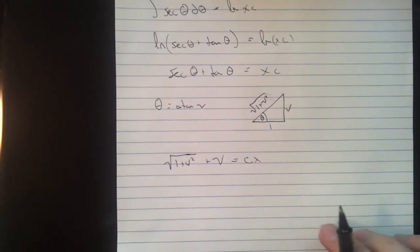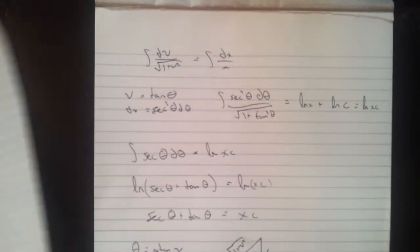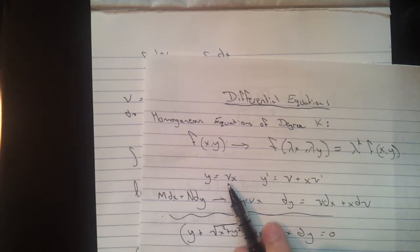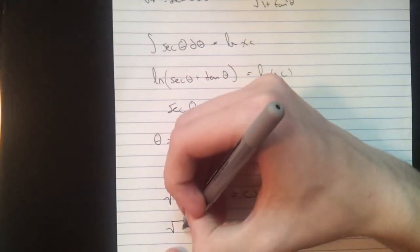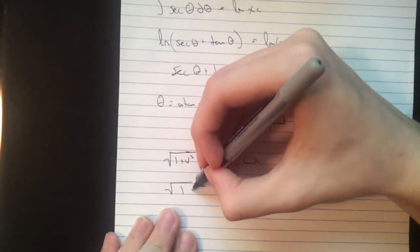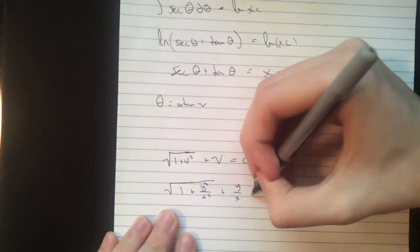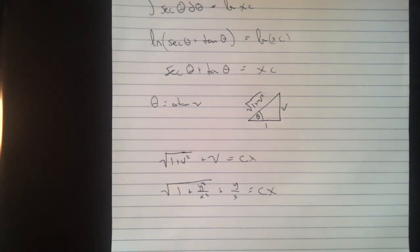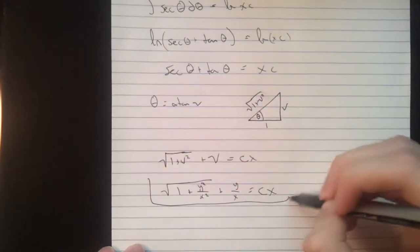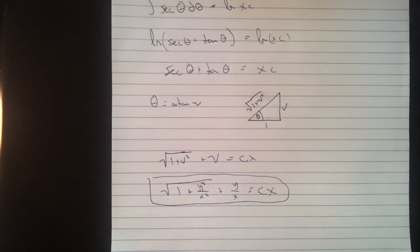And we go back up to the top here. Where did I put that? You go back up to the top over here. We had y equals vx. So v equals y over x. I'm just going to sub that back in. You get the square root of 1 plus y squared over x squared plus y over x equals cx. And you can reduce that down simpler if you want. It's not really necessary, but that is your final answer. You can see these get pretty ugly pretty quickly. This is actually a fairly tame example.